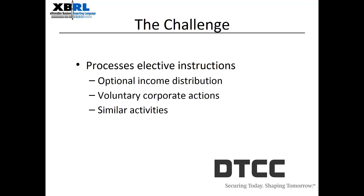In the course of providing dividend and interest payments, dividend reinvestment, and related services, DTCC does business with approximately 4,000 paying and transfer agents. DTCC processes all elective instructions on optional income distributions, voluntary corporate actions, and similar activities. Much of this requires a good deal of manual intervention, and in some cases the entire process at DTCC is manual. The automation that XBRL offers is an opportunity to improve efficiency and reduce the risk that this manual intervention presents.